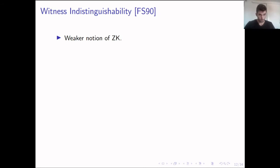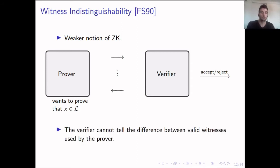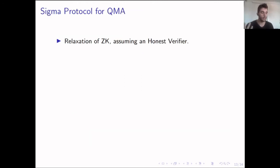Witness indistinguishability is a weaker notion of zero knowledge. Again, we have a prover and a verifier, and the prover wants to prove some statement X in the language. But instead of achieving full zero knowledge, what we're trying to achieve is for the verifier to not be able to tell the difference between two valid witnesses used by the prover. This is exactly what we construct for QMA.